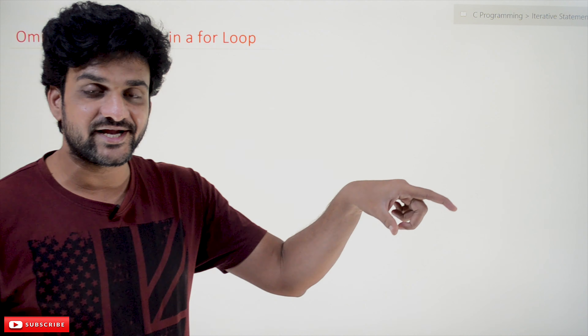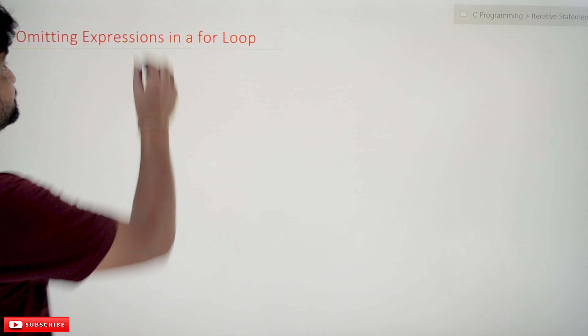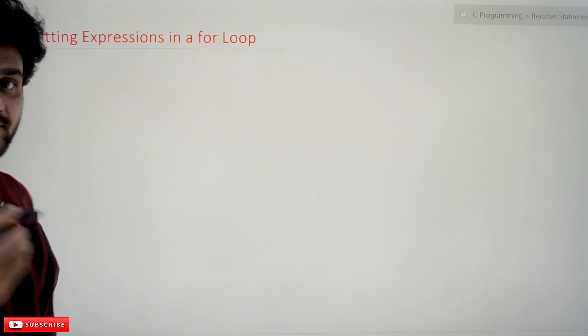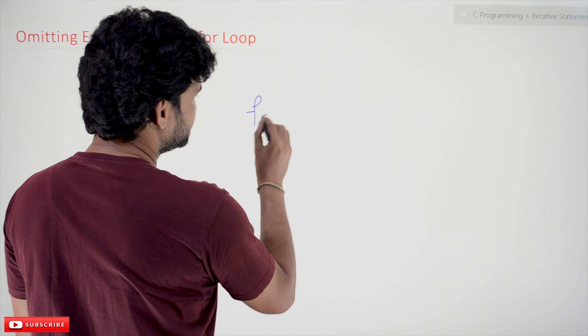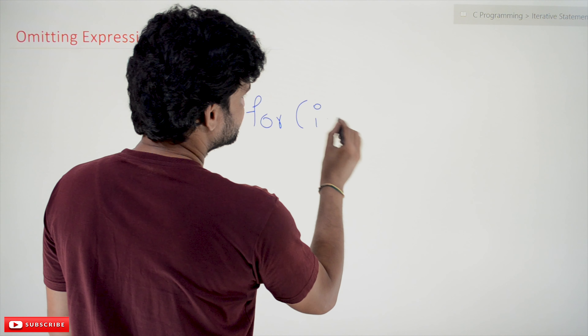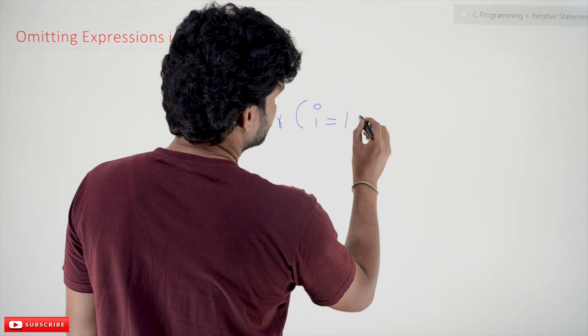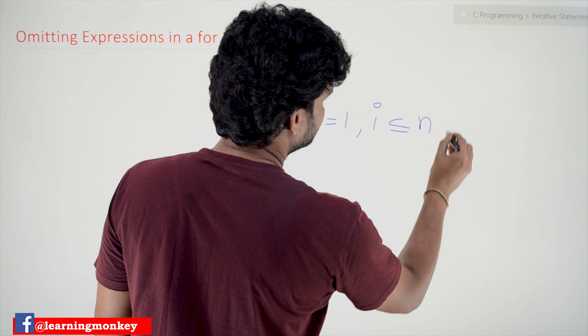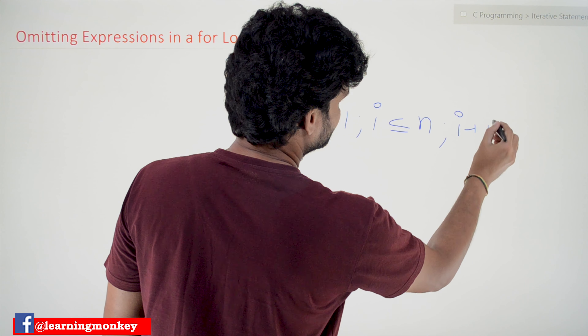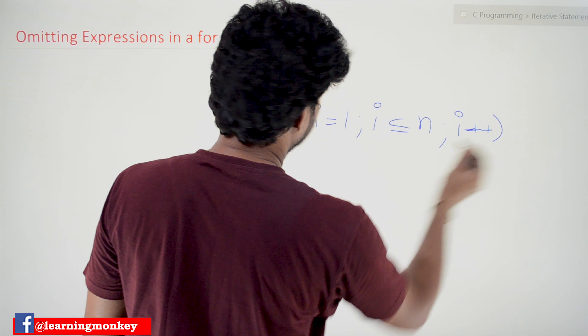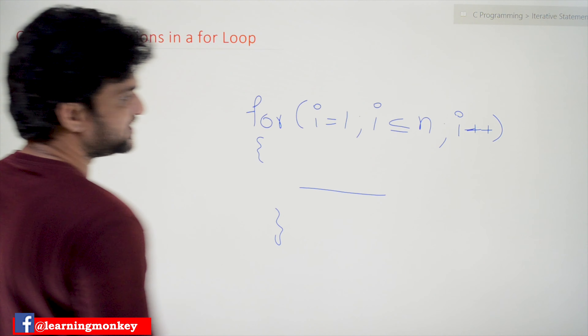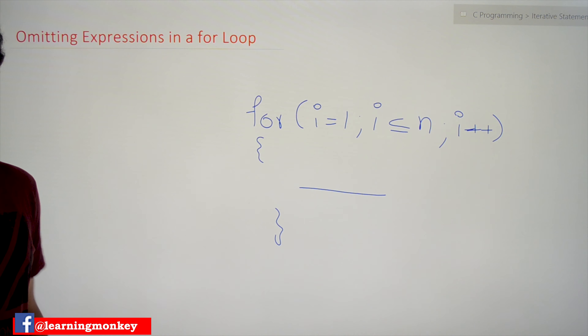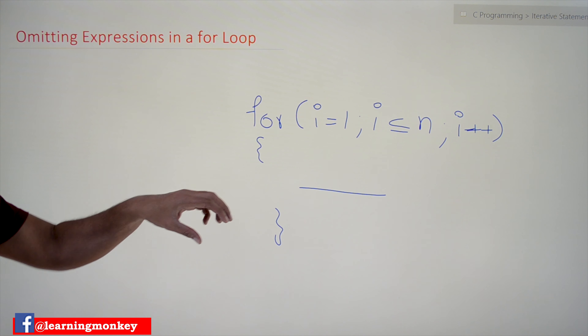In our previous class where we discussed about the for loop, we took an example. In that example we used the for loop for printing the numbers from 1 to N. So the for loop that was used is: for(i = 1; i <= n; i++). This is the construct that we used in the for loop, and we gave some print statement as the loop's body.